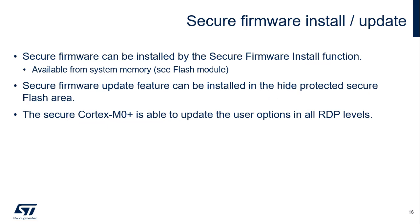The STM32-WL5 includes a pre-programmed secure firmware install (SFI) firmware in its system memory, which allows the secure installation of any Cortex-M0 Plus software. For subsequent firmware updates, a secure firmware update function can be installed in the hide-protected secure flash area. A secure Cortex-M0 Plus software update is possible in all read protection (RDP) levels: 0, 1, and 2.